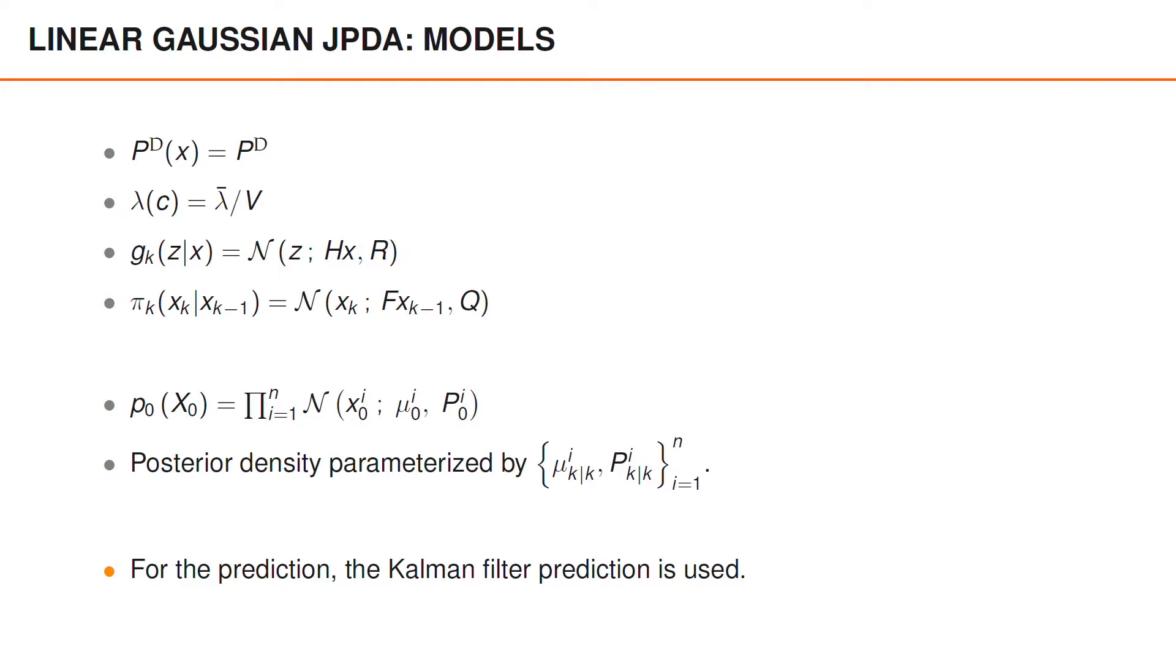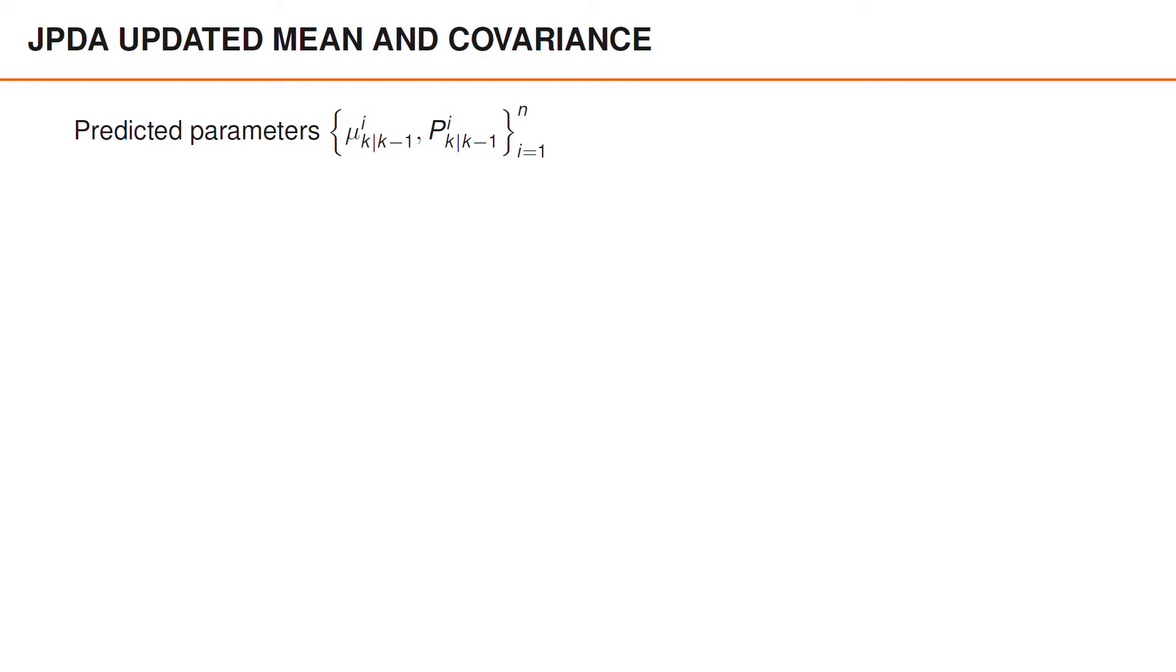Instead we will focus on the merged mean and covariance that we have in the update. So given the predicted parameters, the updated mean for object i is computed by first computing an innovation for each measurement j, denoted epsilon ij. Next, an expected innovation, called epsilon, is computed as the sum of beta ij times epsilon ij, and the updated merged mean is given by the Kalman update with the expected innovation.